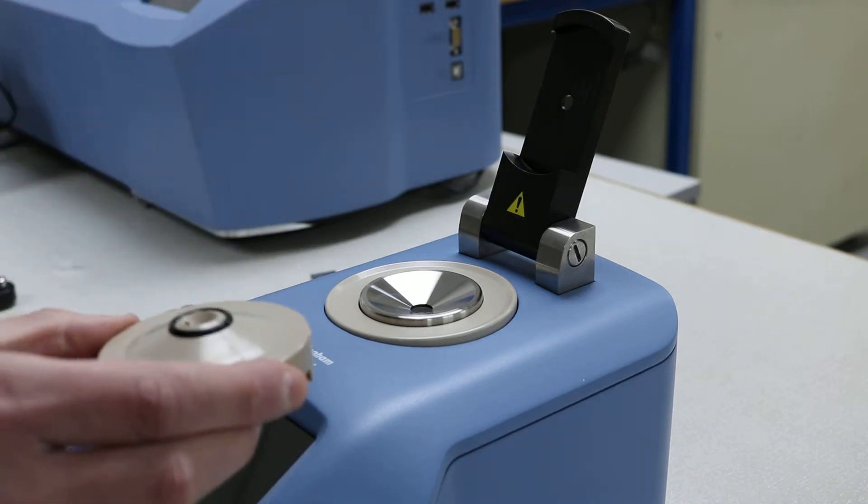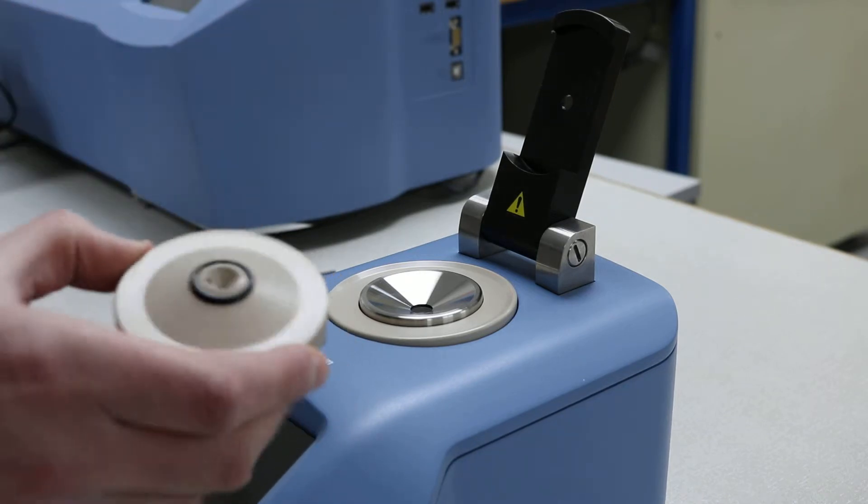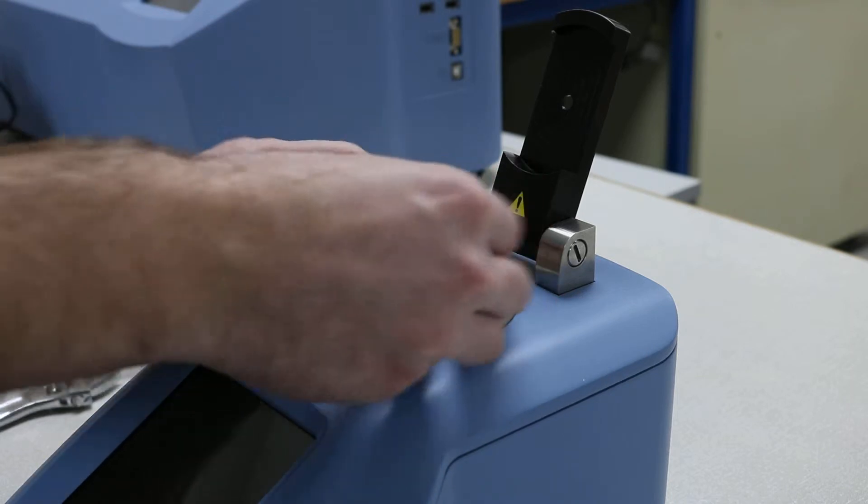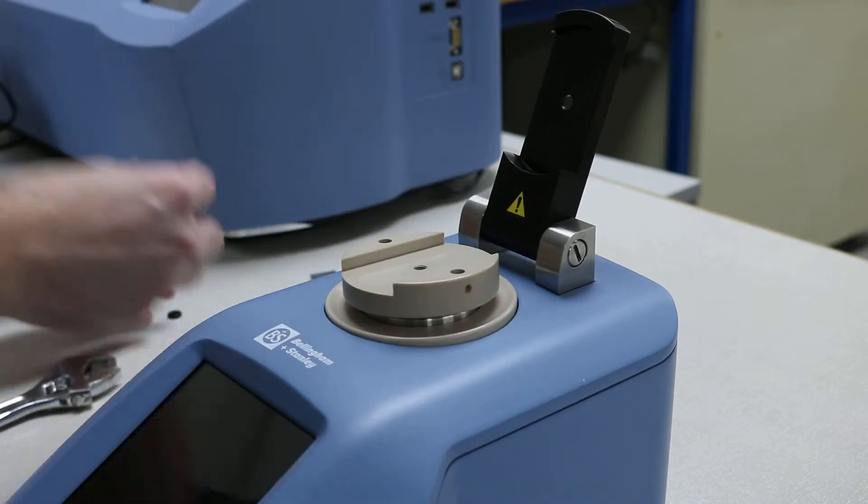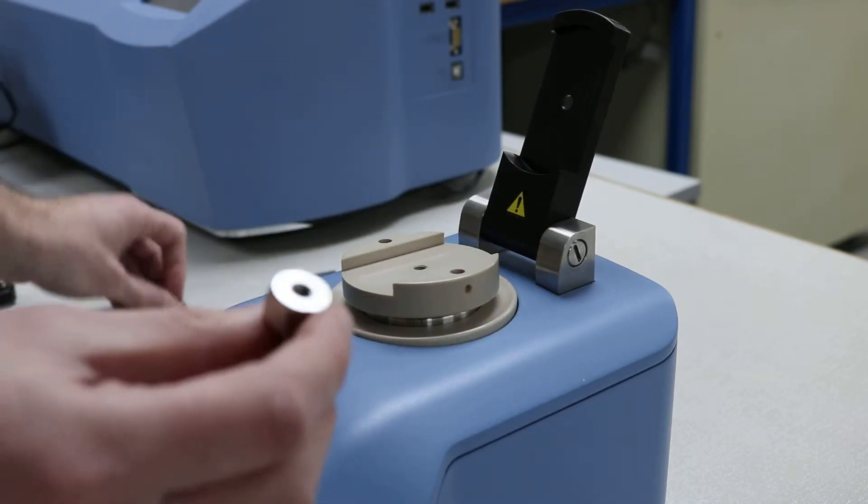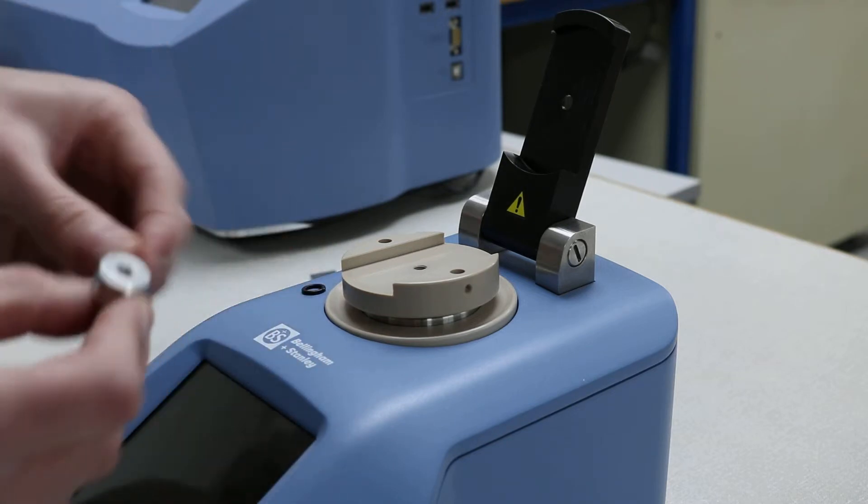This is the flow cell part, the RFM 900 micro version. And to fit this we'll also need this big screw and another larger O-ring.